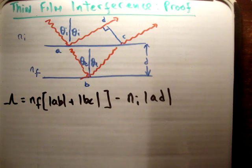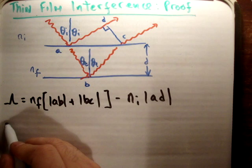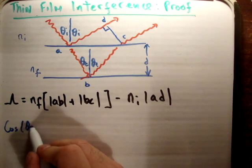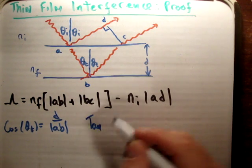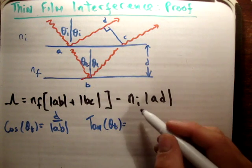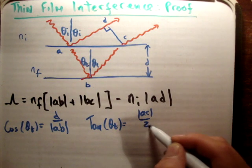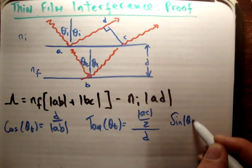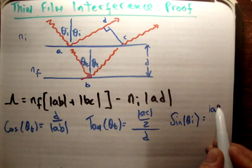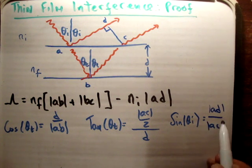Now a small bit of geometry will tell you the following relations: that the cos of theta transmitted equals d over AB, that the tan of theta transmitted equals AC over 2 over d, and finally that sine of theta initial equals AD over AC. Just look carefully. Sine is opposite over hypotenuse, cosine is adjacent over hypotenuse, and tangent is opposite over adjacent. Just apply those relations and you'll get the following expressions.